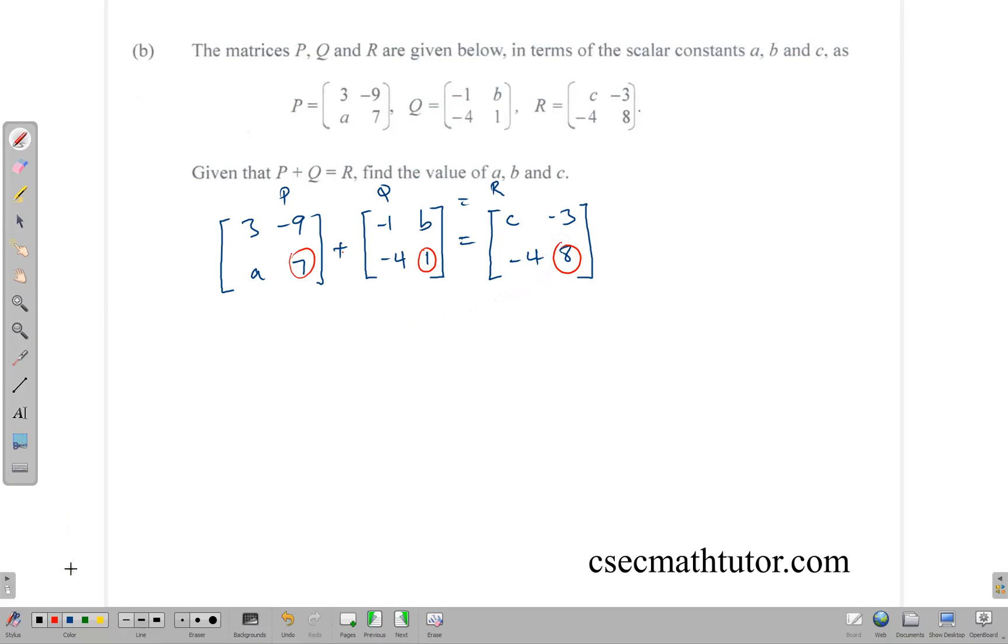So P plus Q equal R. Now, when we're adding matrices, we look at the positions. So it's similar positions. So notice here that 7 plus 1 is equal to 8 in that similar position there. So that's the idea of what we use to solve these things. So similarly, in this position C, we have that 3 plus negative 1 is equal to C. That means 3 minus 1 is equal to C. And of course, that means C is equal to 2.